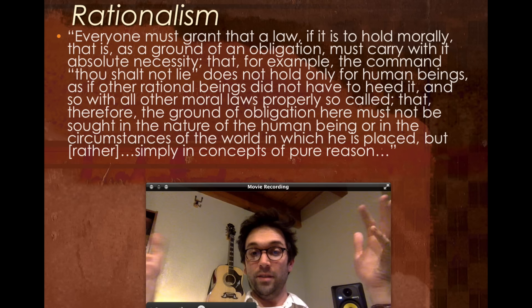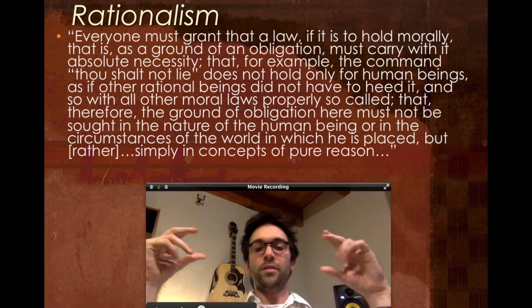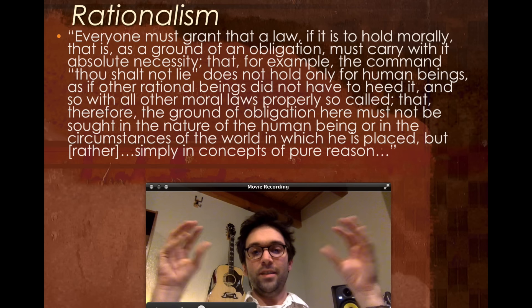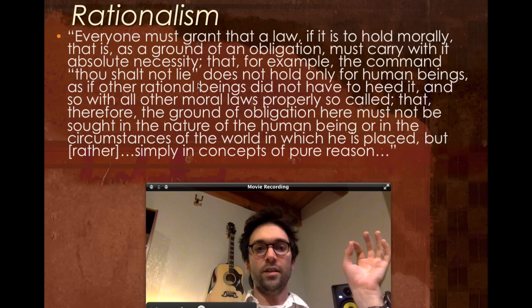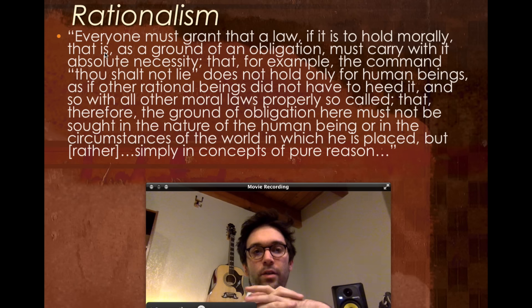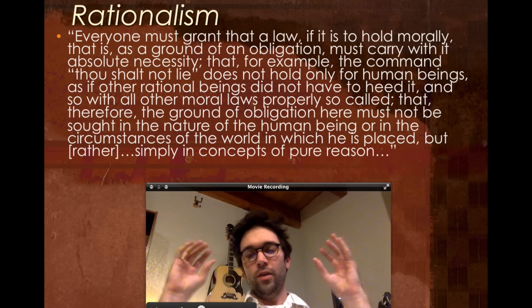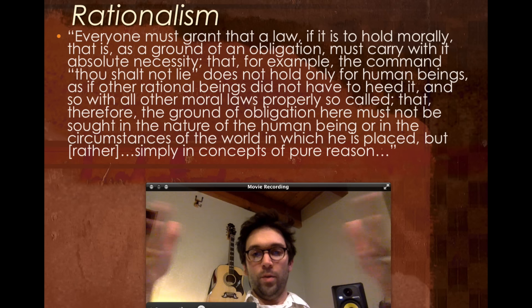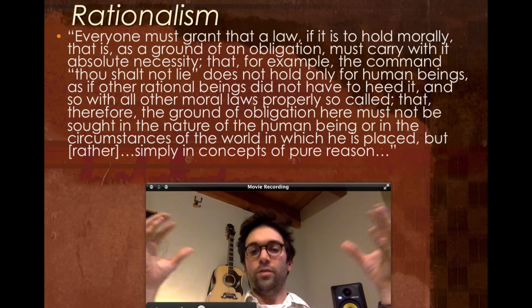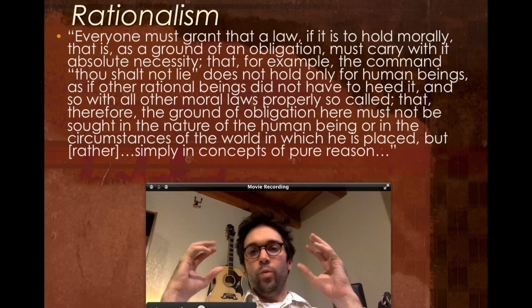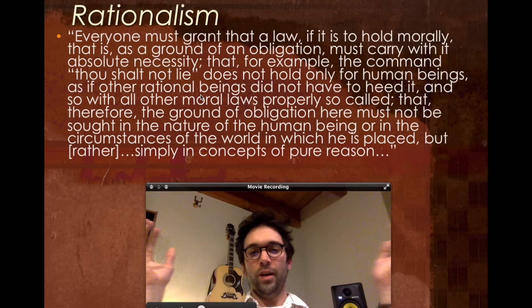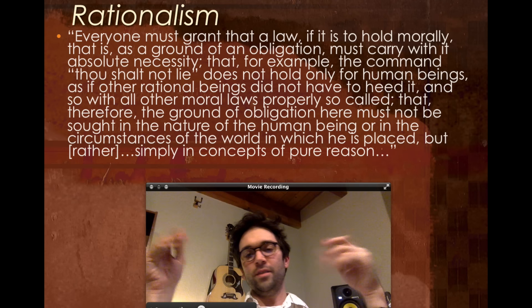The basic idea is: if there's to be such a thing as morality, Kant contends it's got to apply unconditionally, universally — with absolute necessity. Thou shalt not lie is not just a human thing. Moral laws apply to anything sufficiently rational, because as a rationalist, Kant thinks that rationality and morality are tied at the hip. We want to look for the ground of obligation — the source of morality — in rationality itself, not in some contingent facts about human beings.